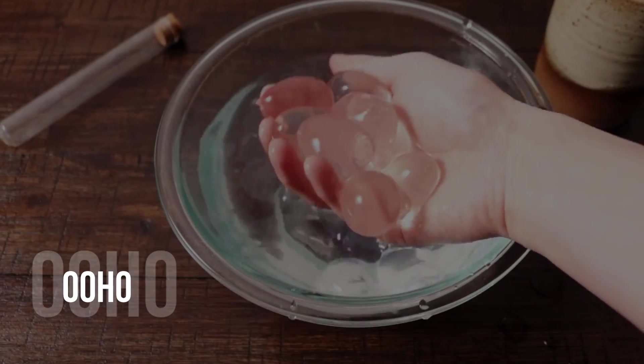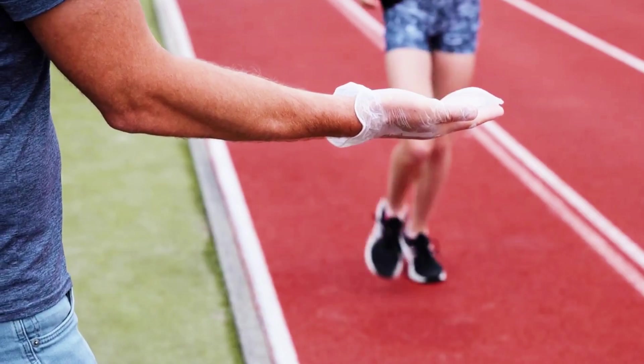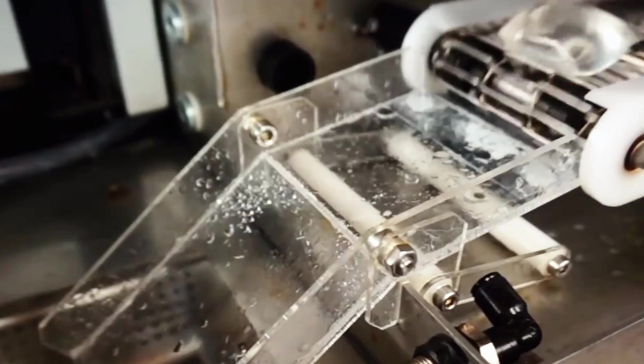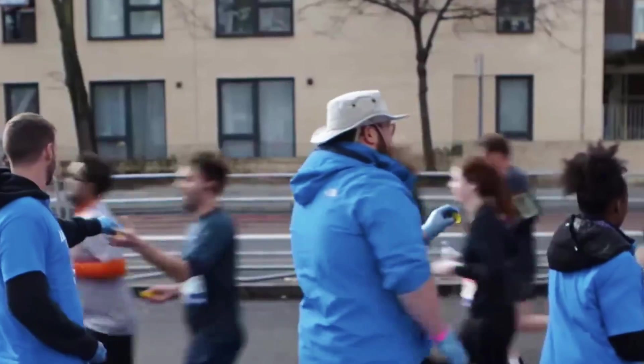Uho. Uho spheres are made by immersing frozen liquid balls in an algal mixture, which forms a membrane around the ice. The ice melts into liquid water in a biodegradable membrane, establishing a watertight cover around it. You can drink the liquid by biting into the tasteless membrane. You can also sip it or devour the whole thing, membrane and all.